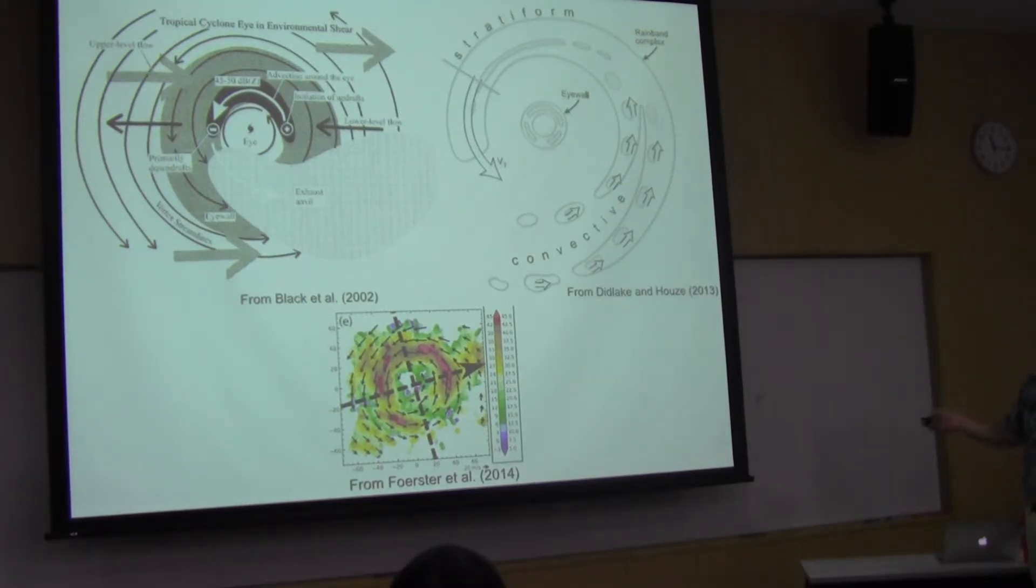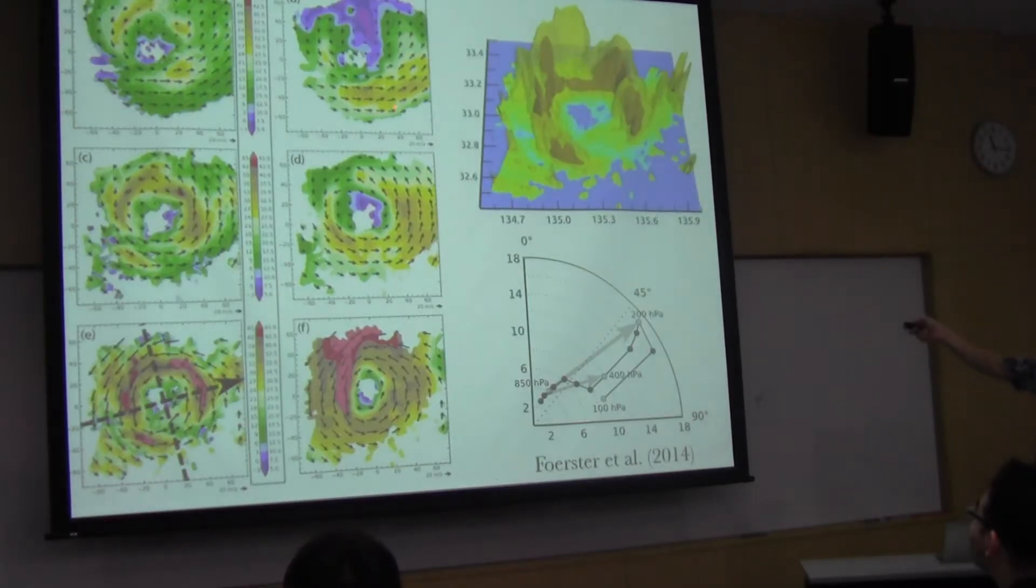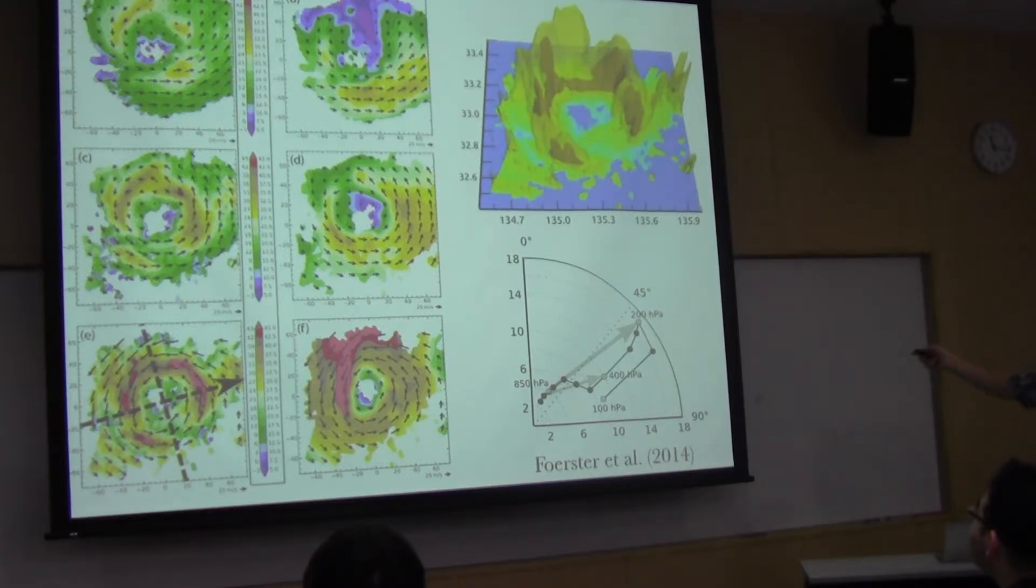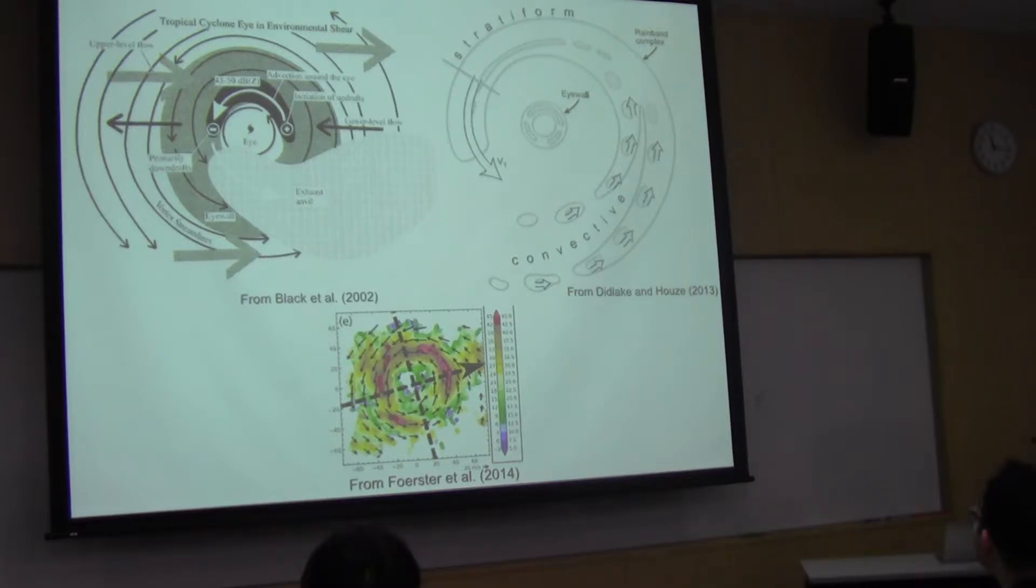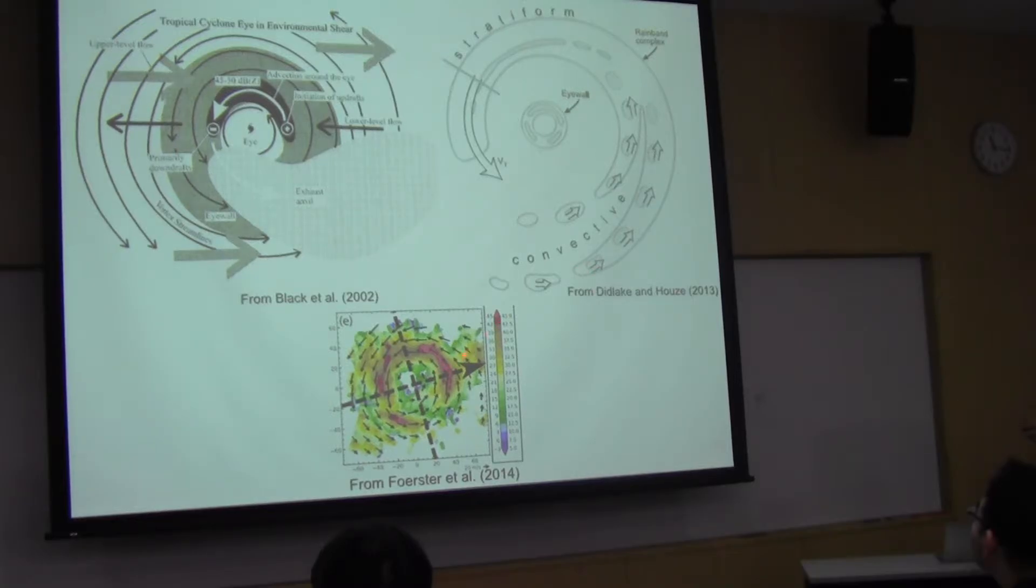If we put this in context from some other airborne radar studies, we see that it matches this conceptual model quite well, and matches that Reasor et al. composite with the strongest reflectivity left of shear. In this case, the shear vector in this plot is left to right. You see initiation of updrafts downshear here, advection around the eye, and then primarily downdrafts on this side. He talks about the exhaust anvil which you can kind of see a little bit up here as well. The other thing I want to point out is this idea about convective to stratiform, and we see in this case a very strong convection really transitioning to stratiform precipitation as we go downshear.